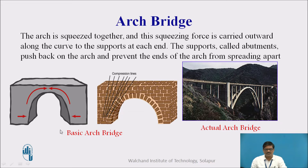These pictures explain the load transfer mechanism. The arch is squeezed together and this squeezing force is carried outward along the curve to the supports at each end. The supports, called abutments, push back on the arch and prevent the ends from spreading out. In the photograph, you can see a typical arch bridge where the load of the superstructure is being transferred horizontally to the end supports.